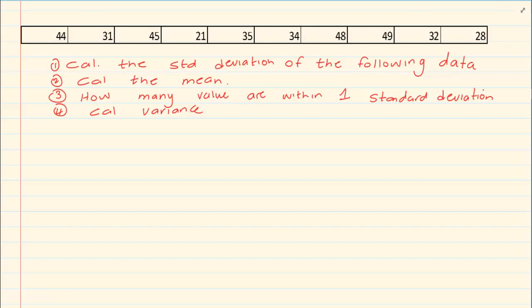Under the X column you are going to press 44 equals, 31 equals, 45 equals, 21 equals, 35 equals, 34 equals, 48 equals, 49 equals, 32 equals, 28 equals. If you look on the left hand side you will see numbers counting down. It stops at 10, which means we have entered all 10 data values.